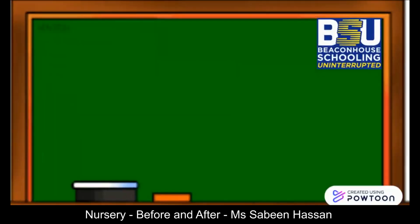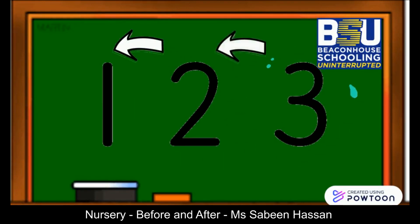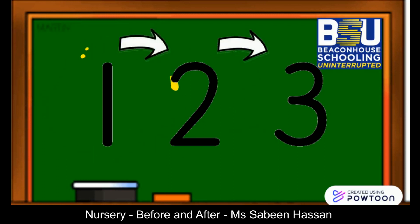An example of before and after are numbers. The number one comes before the number two. Similarly, the number two comes before the number three. You can also say that the number three comes after the number two and the number two comes after the number one.